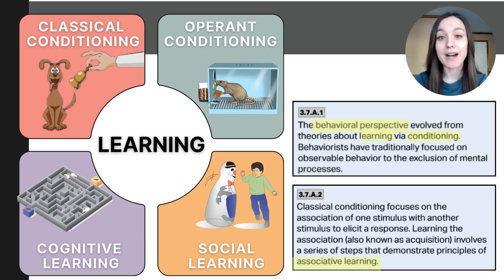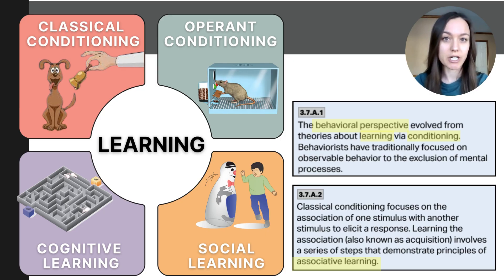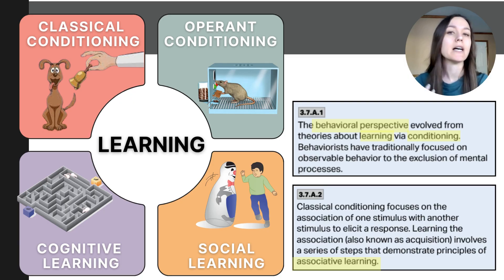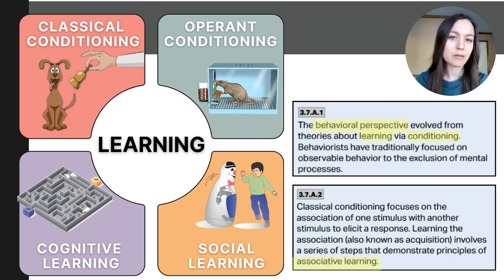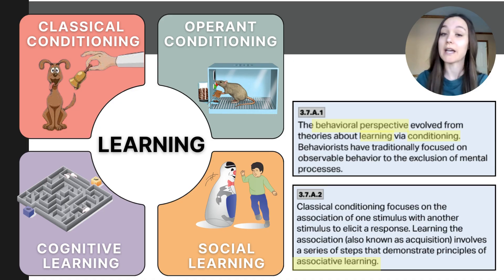As you learned in unit zero, psychology has multiple perspectives and these perspectives often determine the lens through which psychologists view, study, and approach different concepts. As we move into this section about learning, you'll see that the behavioral psychologist's view on learning is very different from a cognitive psychologist or even a social psychologist. Behaviorists believe that psychology must be studied through observable behaviors because behaviors can be seen, documented, and measured. In their eyes, thinking can't be measured, but behaviors can.